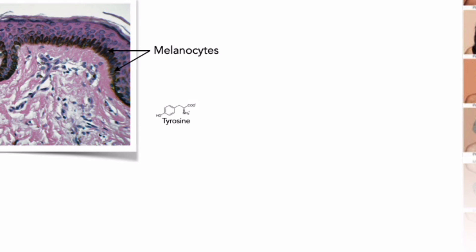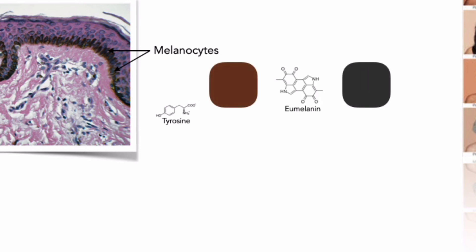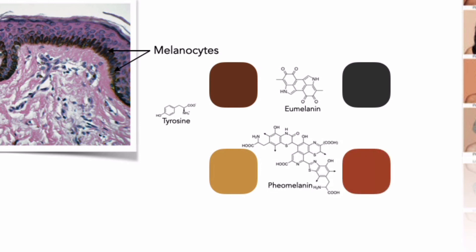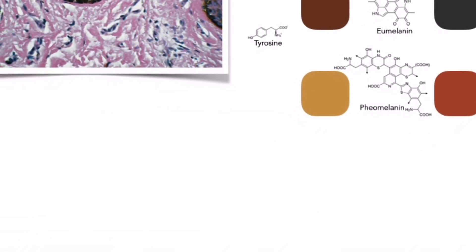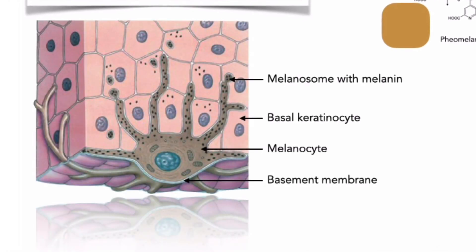Melanin is a major factor in determining skin color. It is actually a broad term for a group of natural pigments found in most organisms, produced in part from the amino acid tyrosine. There are three basic types of melanin, two of which are most important here: eumelanin and pheomelanin. The most common type is eumelanin, of which there are two types — brown eumelanin and black eumelanin. Pheomelanin, a red-yellow pigment, is largely responsible for the color of blonde and red hair.